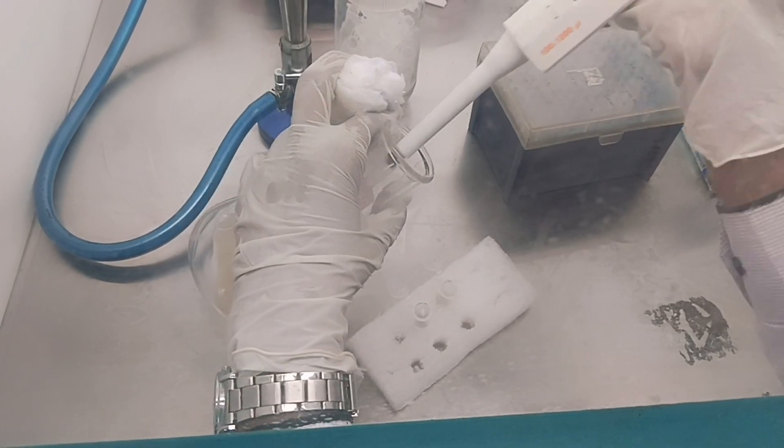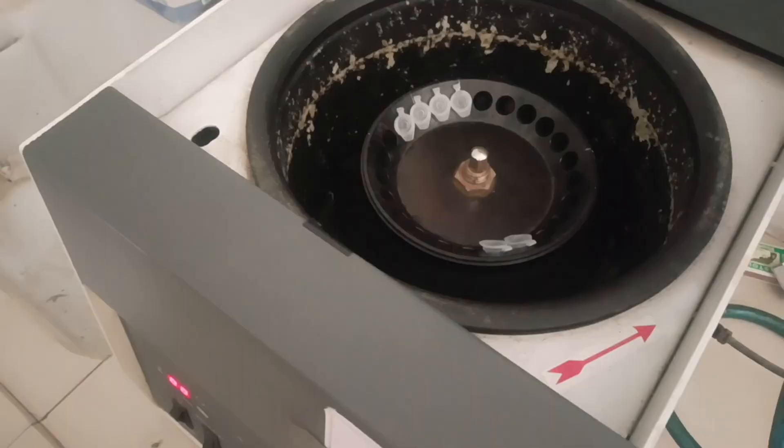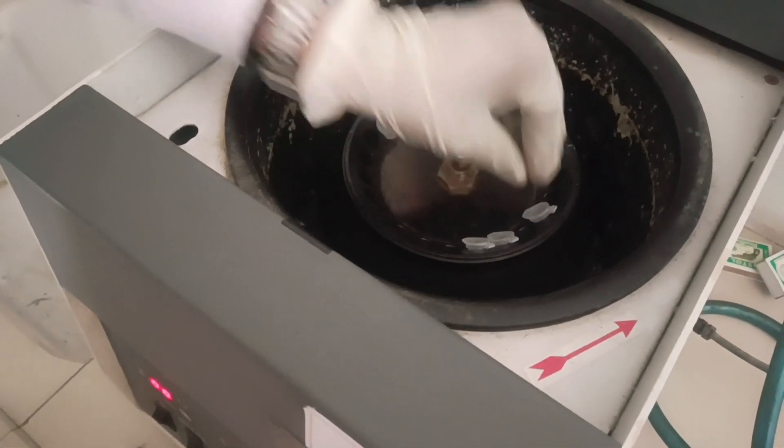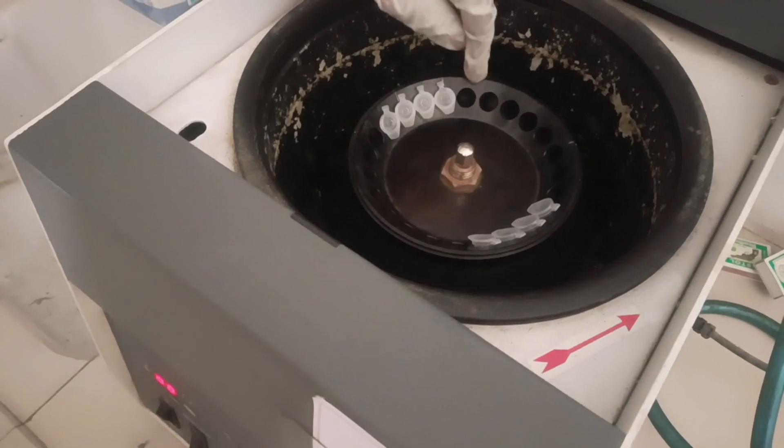Take 2 ml culture in centrifuge tubes. Centrifuge the tubes at 7000 rpm for 4 minutes. Make sure to balance the tubes properly.